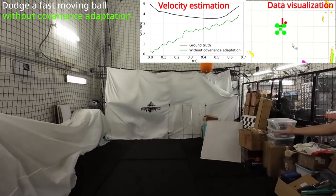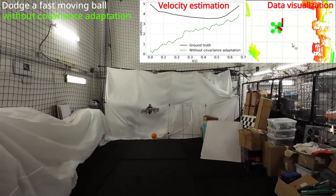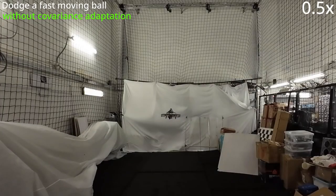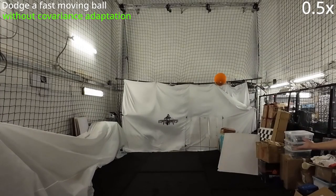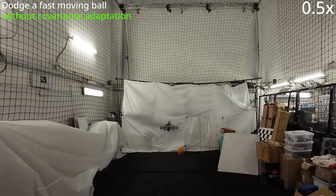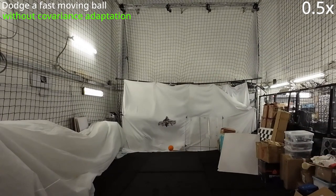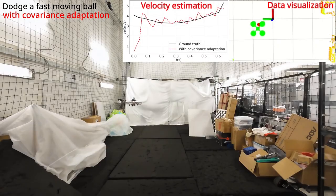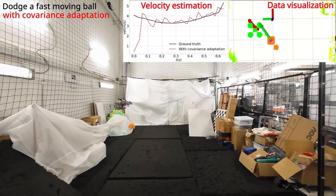We threw a ball toward the hovering UAV at a distance of about 5 meters. Without the covariance adaptation, the UAV can't dodge the fast-moving ball. With our proposed estimation method, the UAV can dodge the ball successfully.